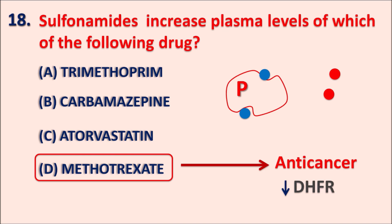Sulfonamides can show protein binding interactions with many drugs like methotrexate and warfarin, displacing them from protein binding sites. Sulfonamides can also be combined with trimethoprim — the combination sulfamethoxazole plus trimethoprim produces a synergistic effect where sulfonamides inhibit folic acid synthesis and trimethoprim inhibits the reduction of folic acid. This combination is used to treat Pneumocystis carinii pneumonia as well as urinary tract infections. The right answer here is methotrexate.